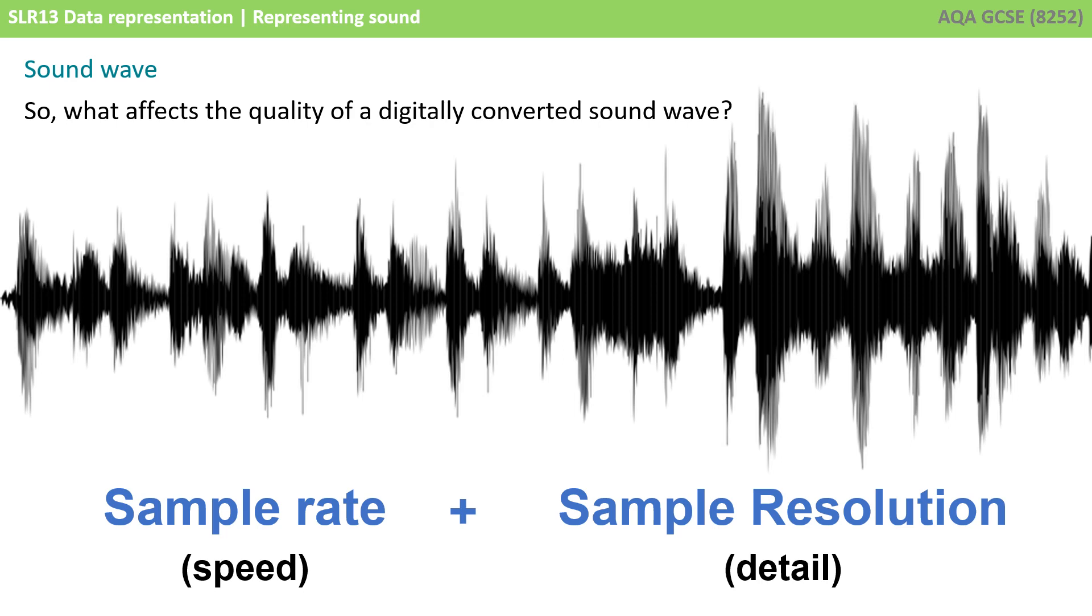There's the sample rate and the sample resolution. The sample rate is how often an audio analog sound wave is sampled. The sample resolution is at each of those sampling rates, what is the level of detail, depth or fidelity that that audio analog wave was recorded at.